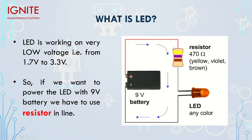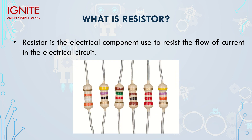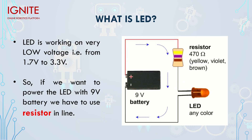Without a resistor, if we want to power the LED with a 9-volt battery, we have to use a resistor in line. A resistor is an electrical component used to resist the flow of current in the circuit. Without a resistor, the high power causes more current to flow through the LED and the LED will burst. The resistor opposes the flow of electrons and allows only the desired amount of current required by the LED.